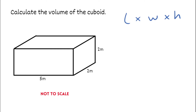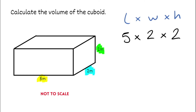Looking at this first example, the length is 5 metres, the width is 2 metres, and we then multiply by the height, which is also 2 metres. So we'd have 5 multiplied by 2 multiplied by 2 again. 5 times 2 is 10, multiplied by 2 again gives us 20. We've got to make sure we're using the correct units — we were dealing with metres, and because we're finding the volume, they need to be cubed. So the answer is 20 metres cubed.